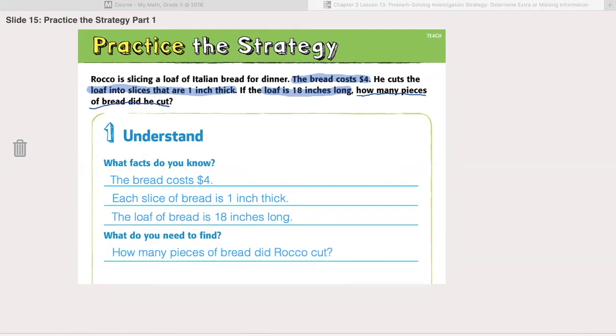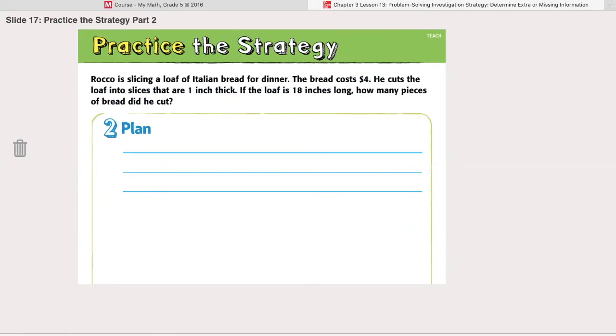Let's go to step two. Plan. So first, determine if there is extra or missing information. If we're trying to determine how many pieces of bread he cut, the cost of bread is not needed.